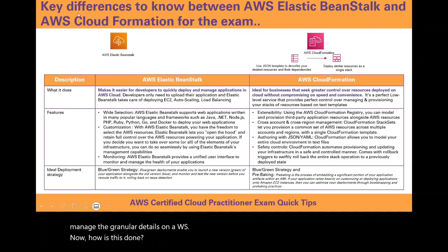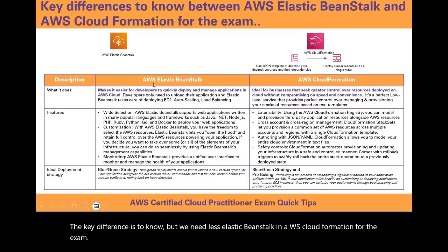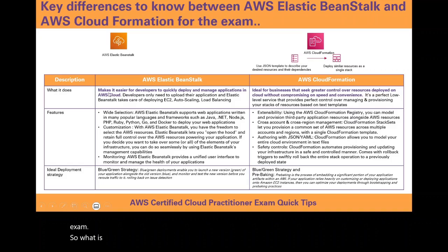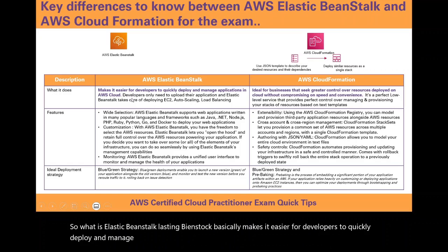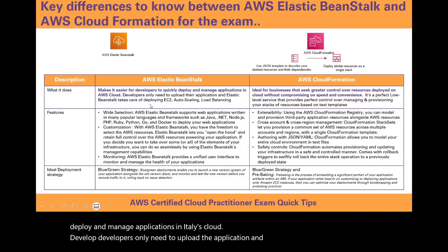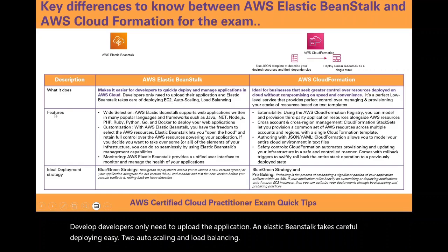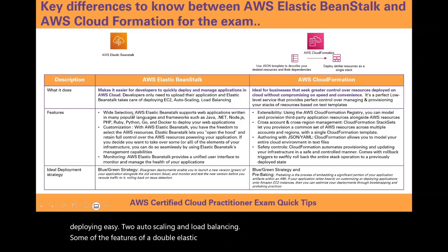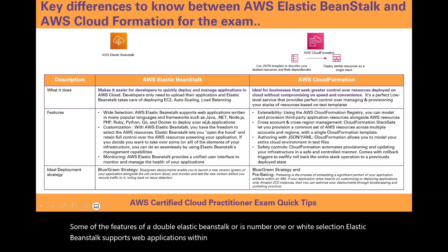The key differences to know between AWS Elastic Beanstalk and AWS CloudFormation for the exam: Elastic Beanstalk makes it easier for developers to quickly deploy and manage applications in the AWS Cloud. Developers only need to upload their application and Elastic Beanstalk takes care of deploying EC2, auto scaling, and load balancing. One feature is a wide selection — Elastic Beanstalk supports web applications written in many popular languages and frameworks such as Java, .NET, Node.js, and so on.